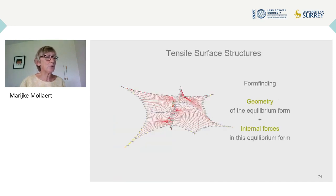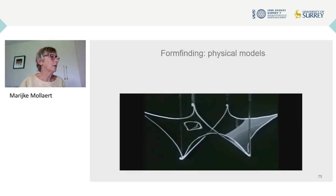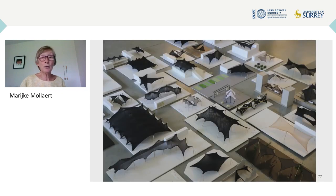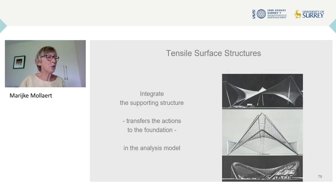The first step in the design of tensile surface structures is form-finding: finding at the same time the geometry and the internal forces in the equilibrium shape. Physical modelling is still a good way to explore equilibrium shapes, be it with soap films or with stretchable fabric. It is also a good strategy to incorporate a supporting structure in these physical explorations. The supporting structure transfers the pre-stress and actions on the membrane to the foundations, using poles, tie-down cables, beams or arches. Making integrated physical as well as integrated numerical models gives a better insight in the structural behaviour.